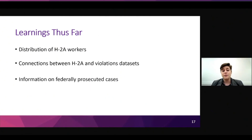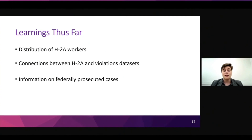From our preliminary analyses, we've learned a few things. Information from the H-2A dataset can tell us where migrant agricultural workers are and what type of work they're doing. It can also show us some information about employers, and in the future we hope to link the employer names from the H-2A dataset with those from the labor violations dataset, giving us information on potential labor exploitation. We've also been able to track some of the 12 federally prosecuted cases of agricultural labor exploitation in both datasets, which leads us to believe that linking the data sets could be helpful in identifying potential labor exploitation.